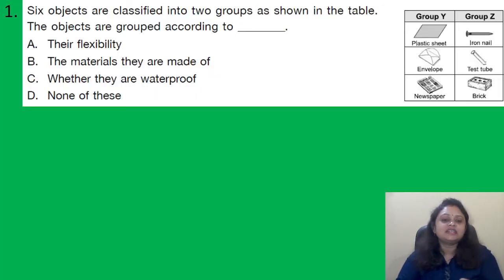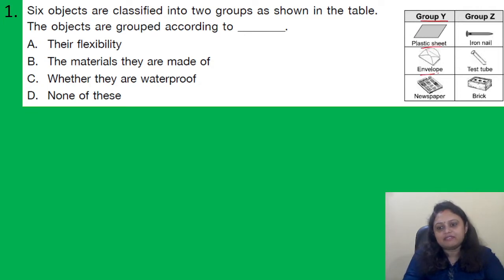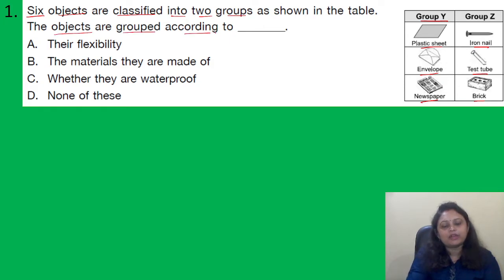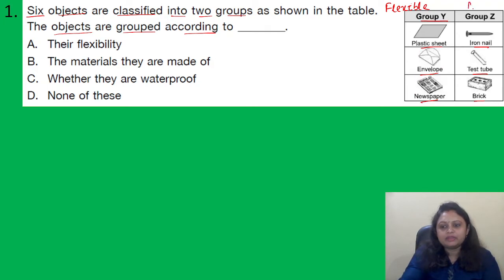Our first question: 6 objects are classified into 2 groups as shown in the table. The objects are grouped according to — option A: their flexibility; B: the materials they are made of; C: whether they are waterproof; D: none of these. In Group Y, plastic seat, envelope, and newspaper are there. In Group Z, iron nail, test tube, and bricks are there. The objects are grouped according to their flexibility. In Group Y, plastic sheet, envelope, and newspaper are flexible, while in Group Z, iron nail, test tube, and brick are not flexible. So the correct option is option A.